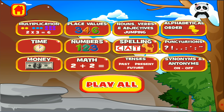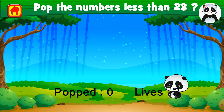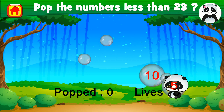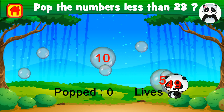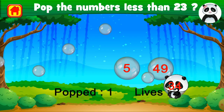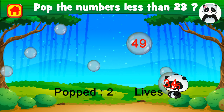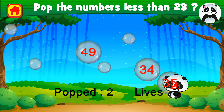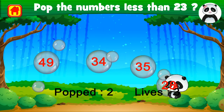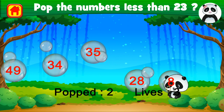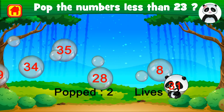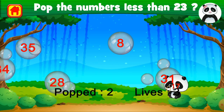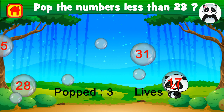Now we will learn numbers. Pop the bubbles with numbers that are less than 23. We have to pop the numbers which are less than 23. 10 is less than 23 — pop it. Fantastic. 5 — excellent. 49 is greater so we do not pop. 34 is also greater. 35 is also greater. 28 is greater than 23. But 8 — let's pop it. Thank you.